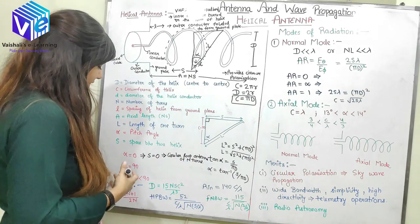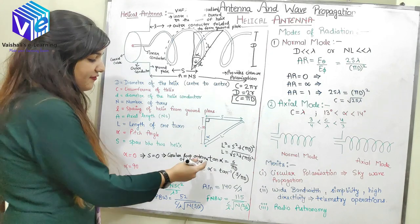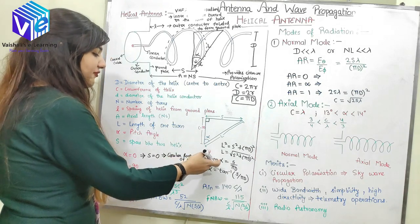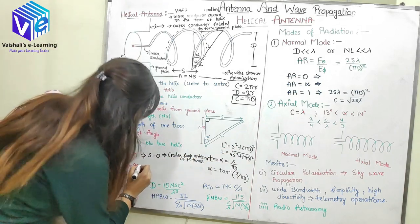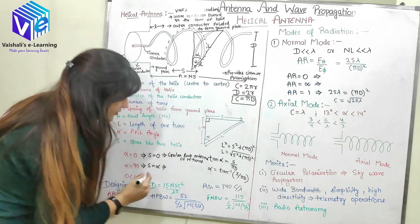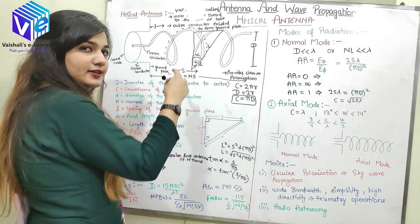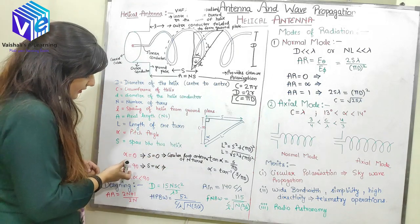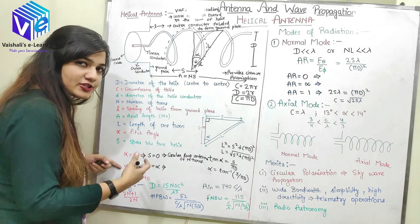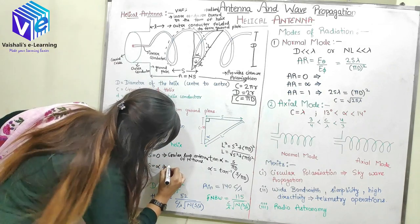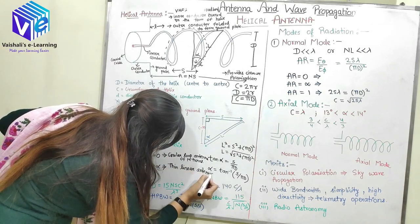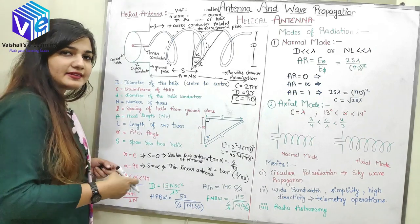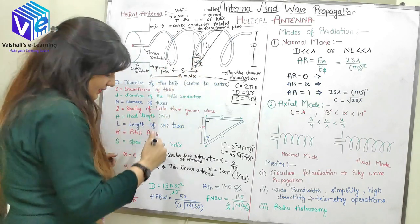The next case is when alpha equals 90. When alpha equals 90, tan(90) would be infinite, meaning S would be infinite — the spacing between two turns is infinite. This can only happen in the case of a thin linear antenna, so when alpha equals 90, the structure resembles a thin linear antenna. The third case is when alpha is between 0 and 90 — in this case, the structure resembles a helical antenna.